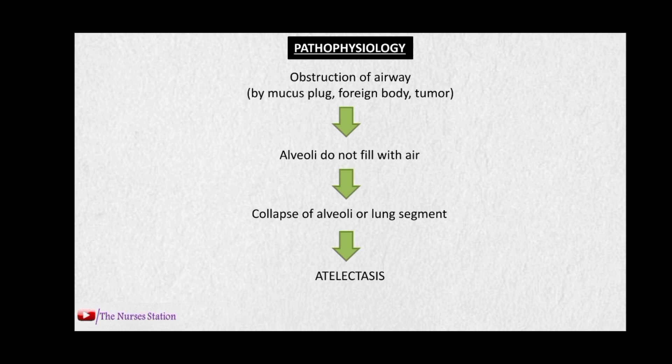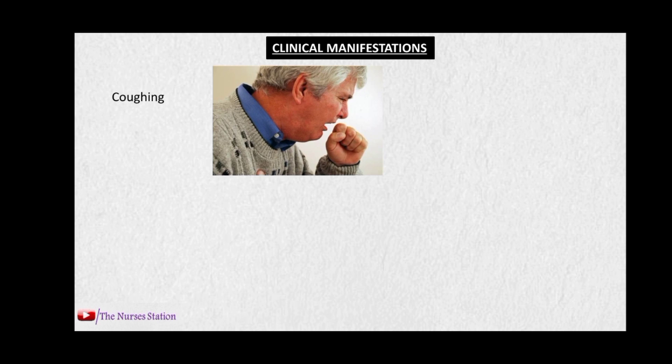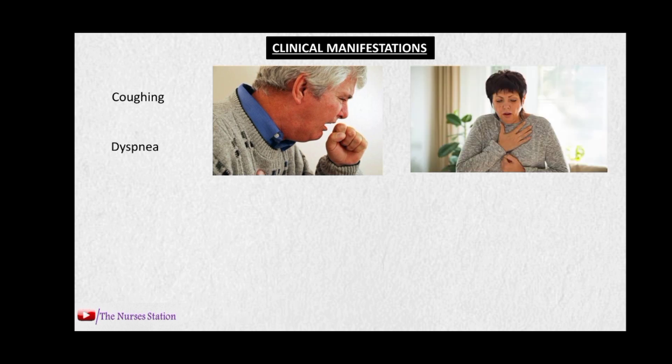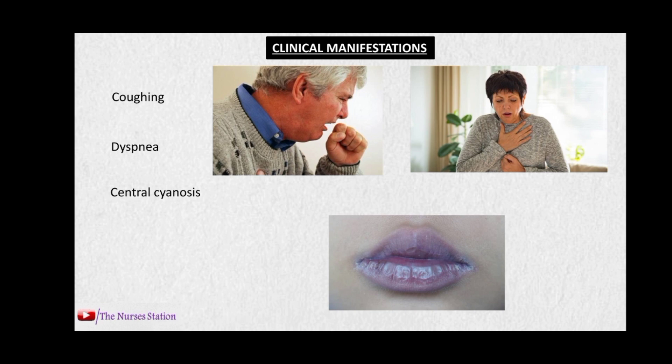The clinical manifestations: there may be coughing due to irritation of airways from excess mucus production or inflammation. The patient can have dyspnea — whenever there is atelectasis, there is no exchange of air in the affected part, no oxygen getting into the blood and no carbon dioxide leaving the blood, so the oxygen level in the blood decreases, resulting in dyspnea. There may be central cyanosis due to decreasing oxygen levels in the blood, wheezing due to excess mucus or airway inflammation, and rapid and shallow breathing.